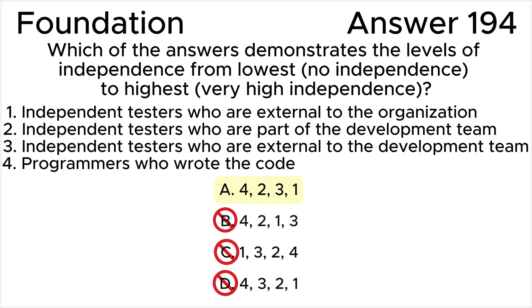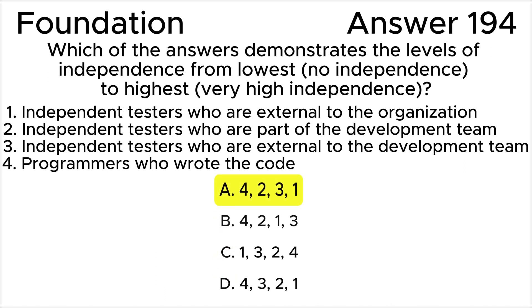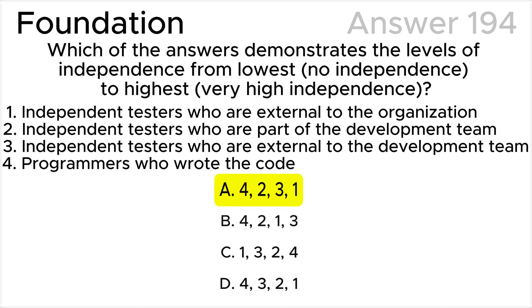In summary, the list of the levels of independence of testers from lowest to highest are 4, 2, 3, 1, and the correct answer is A.